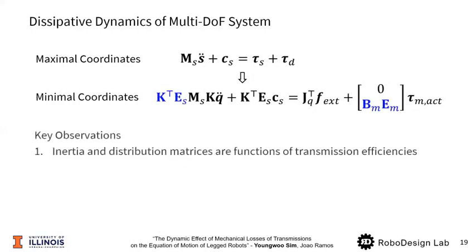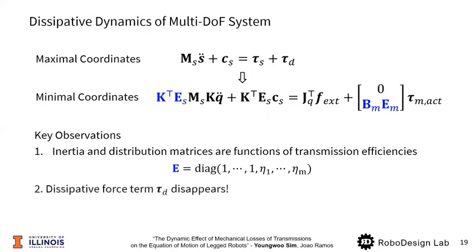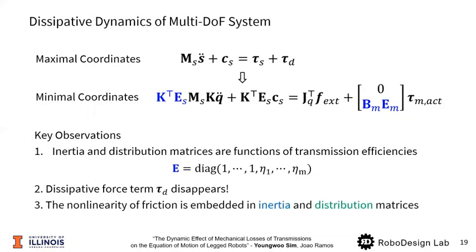Let's begin with a redundant system, then apply kinematic constraint and energy constraint to obtain a minimal system. First, please notice that highlighted inertia and distribution matrices are affected by efficiency matrix E. Second, the dissipated force tau_d has disappeared. Lastly, the model is dependent on the direction of energy flow and transmission.